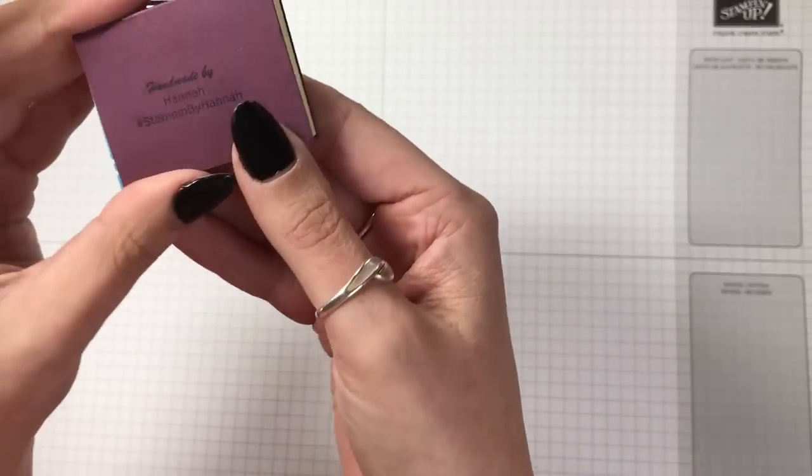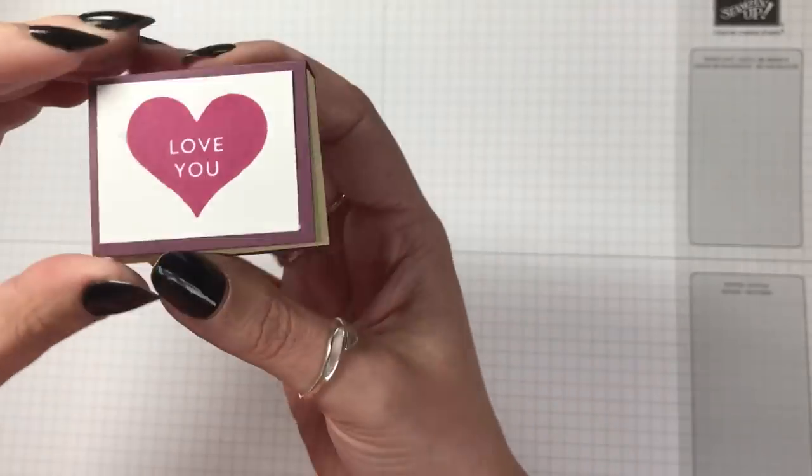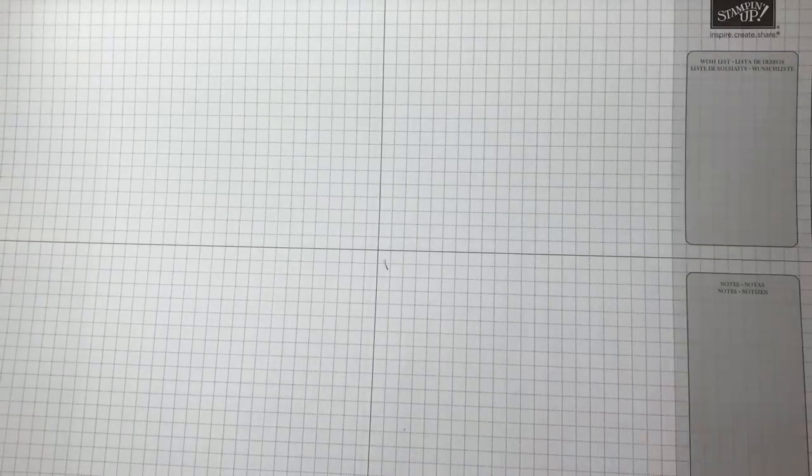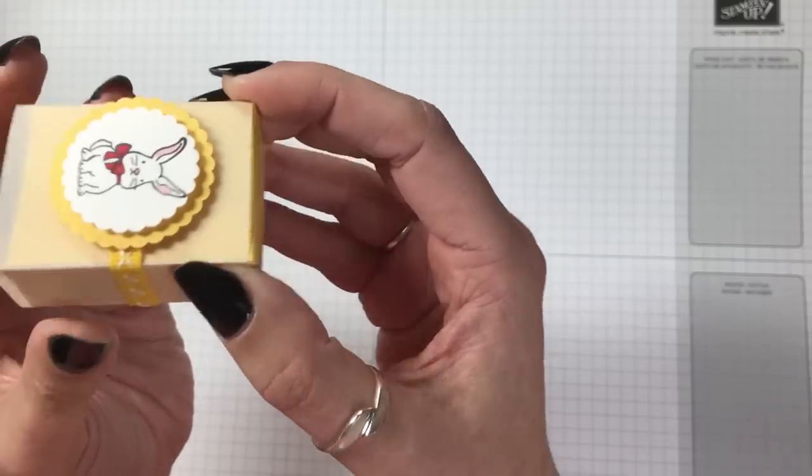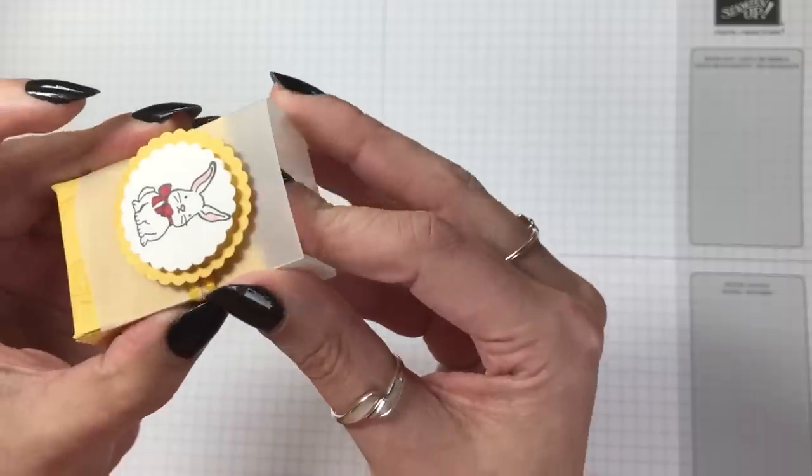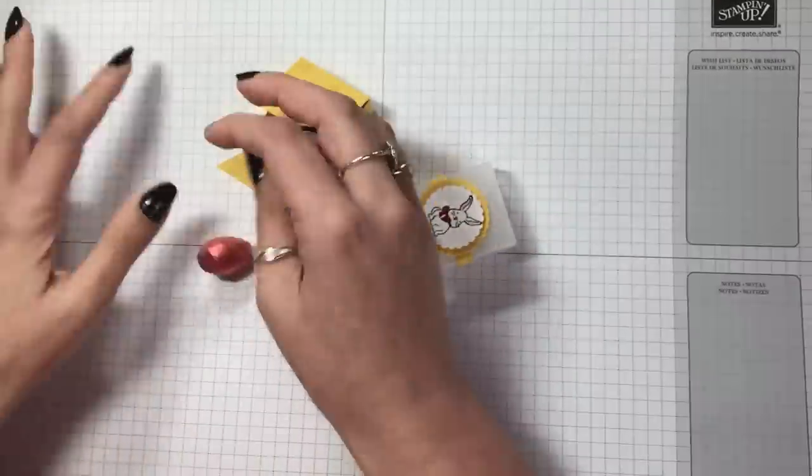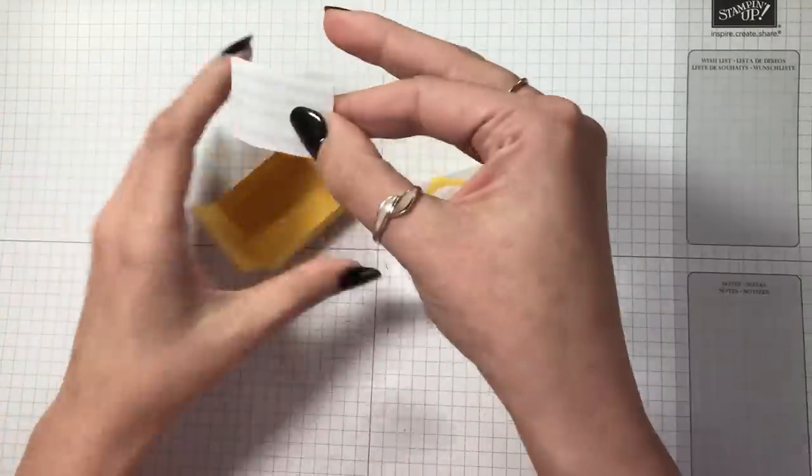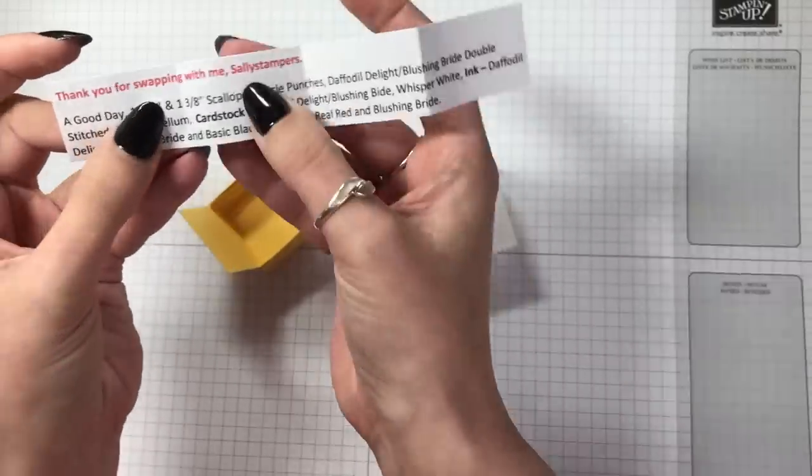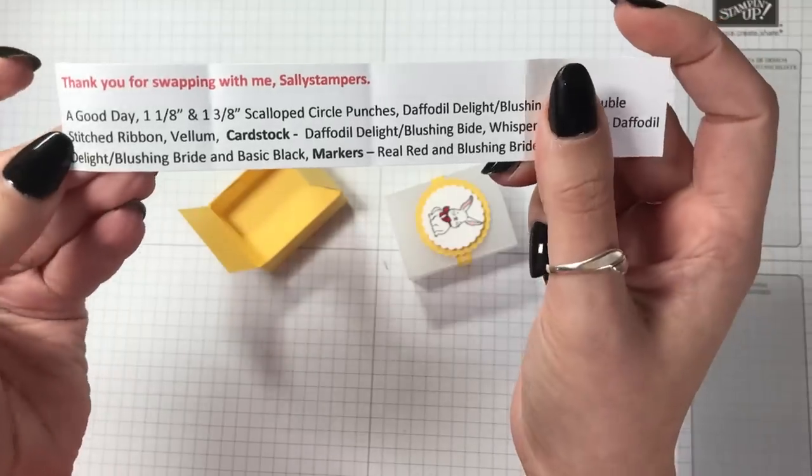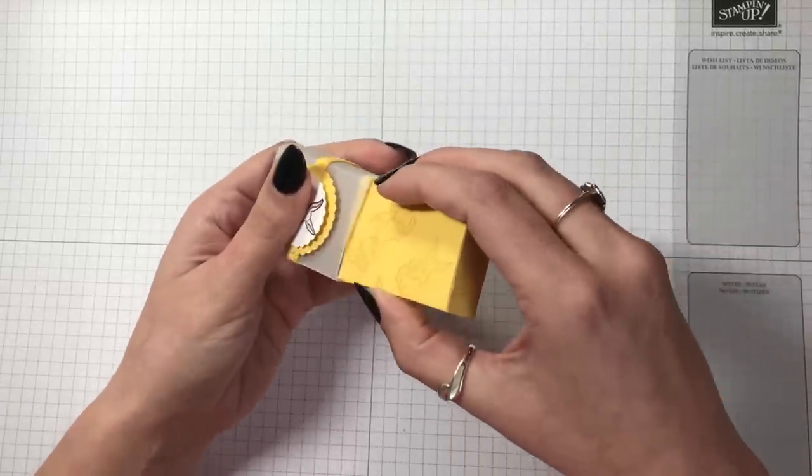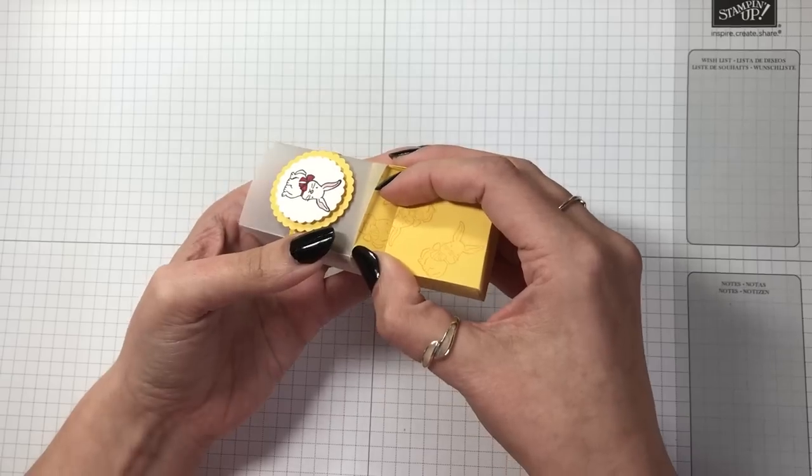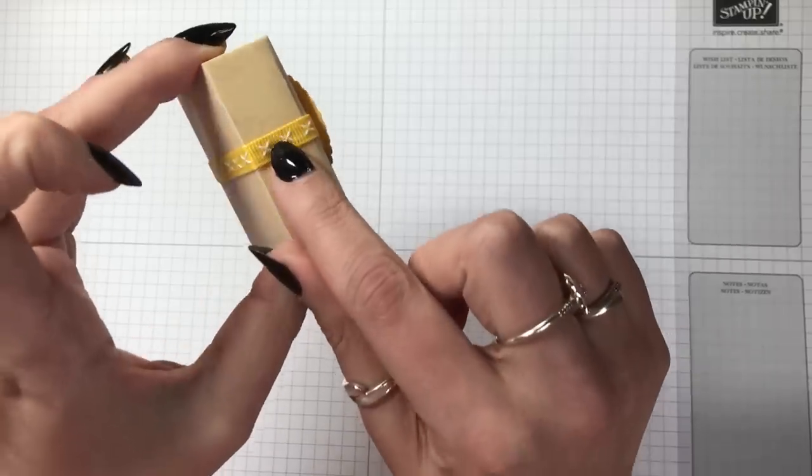I got another post-it note love you from Stampin' by Hannah. Then Sally from Sally Stampers, she made a matchstick box, so lovely. It's mini Easter eggs and there's a note inside. That's using the It's a Good Day stamp set and she used daffodil delight stitch ribbon as well. Gorgeous little box.